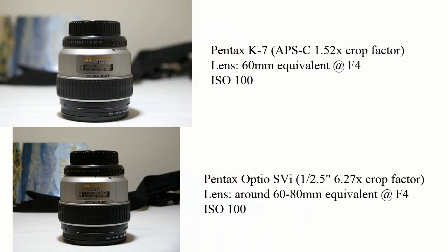Another benefit is control of depth of field, which basically means the amount of sharpness — defined mostly by your lens's aperture, how large or wide that opening inside your lens is. You can get a thinner depth of field with a larger sensor. For example, with a small digicam it's really difficult to get blurred backgrounds, but with a full-frame camera it's very easy in comparison.